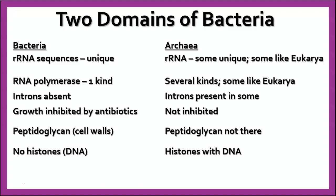Bacteria do not have introns in their DNA — their DNA is 100% exons. Whereas Archaea, some of them have introns like eukaryotes do. Bacteria are inhibited by antibiotics of various kinds, and Archaea are not. Bacteria have peptidoglycan in their cell walls — a starch-peptide complex molecule — but it's not present in the cell walls of Archaea. Bacteria have no histones, whereas Archaea do have some histones with their DNA. You can see that Archaea seem to have some things more in common with eukaryotes than with other prokaryotes.